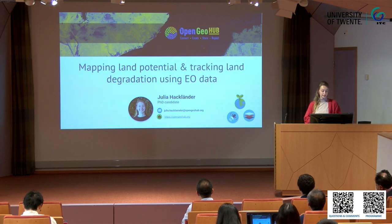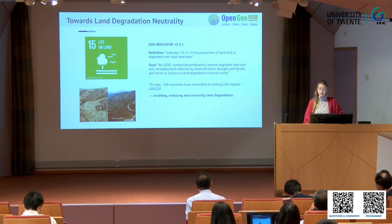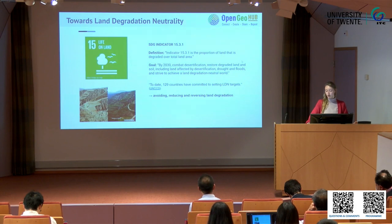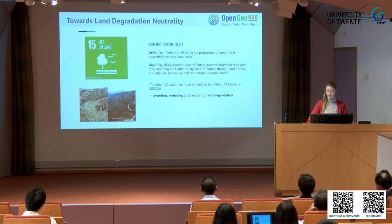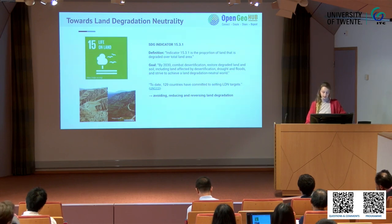My topic is mapping land potential and tracking land degradation using Earth observation data. The background for this is SDG Indicator 15.3.1, which is the proportion of land that is degraded over the total land area. Into this feeds the Land Degradation Neutrality Initiative by UNCCD, which aims at avoiding, reducing, and reversing land degradation.